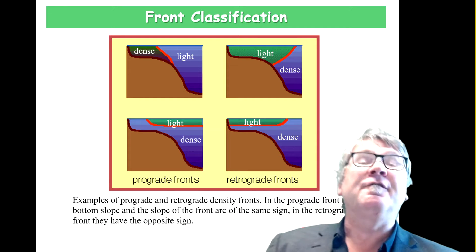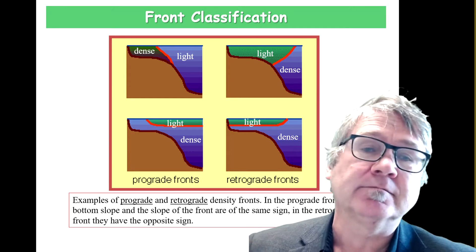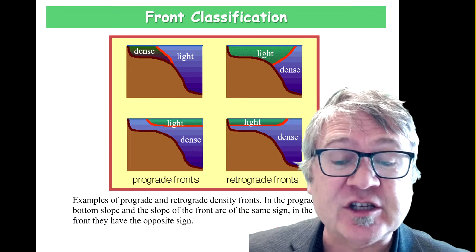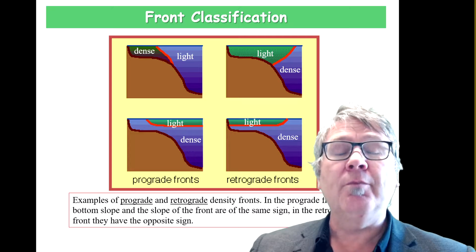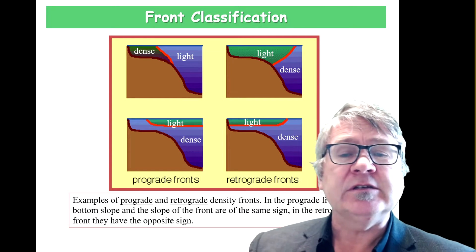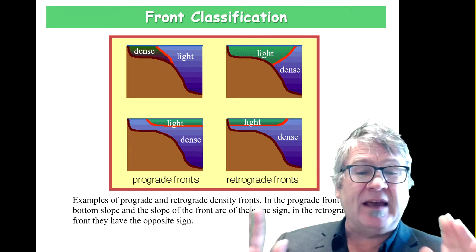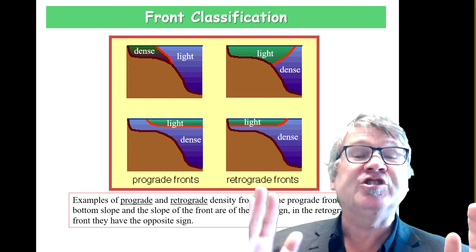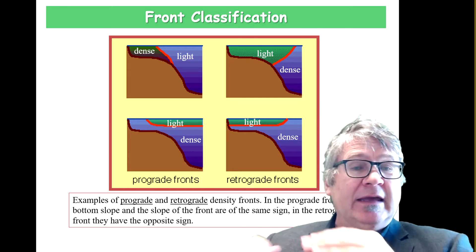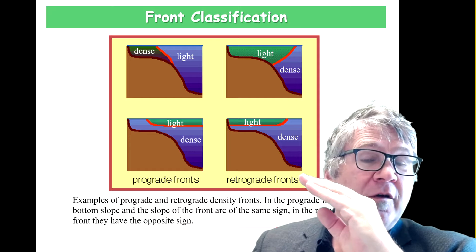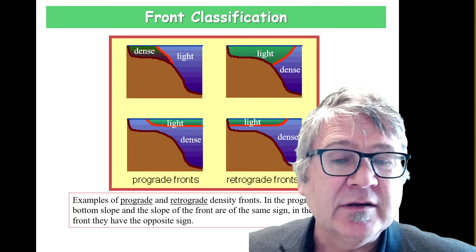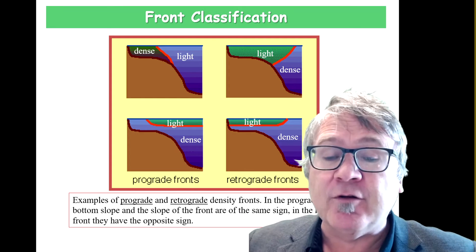Now there are different frontal shapes and they have definitions. Some fronts are called prograde fronts and some are called retrograde. The definition is based on the general shape. If you look from the side, there are four examples shown here. If the slope of the front has the same sign as the slope of the seabed, it's called a prograde front.